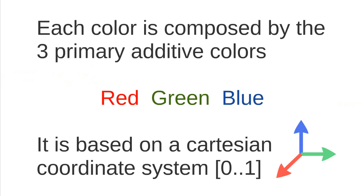In this model, each color is composed by the three primary additive colors which are red, green, and blue. It is based on a Cartesian coordinate system in which we have three coordinates, and each of the three coordinates stands for one of these three colors.